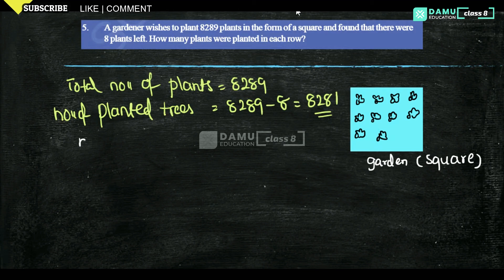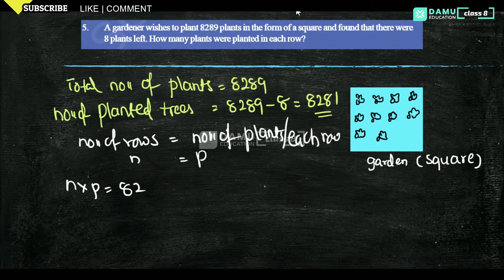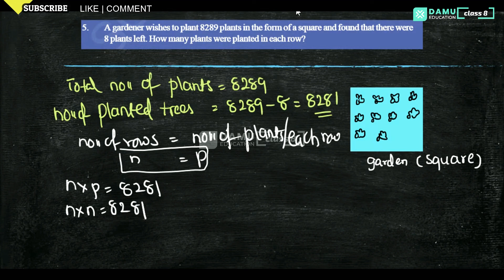Since the plants are arranged in a square, the total number of rows equals the number of plants per row. So if n = number of rows and p = plants per row, then n × p = 8281, and since n and p are equal, we get n² = 8281. Therefore n = √8281.